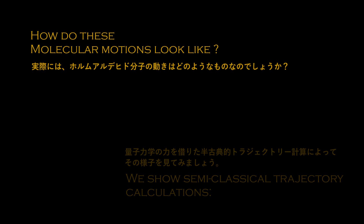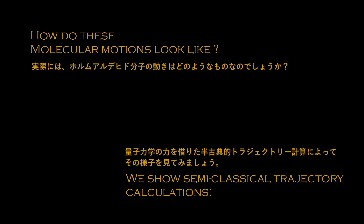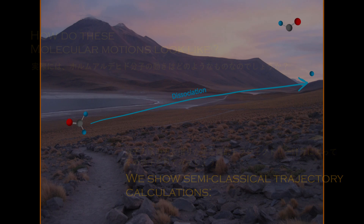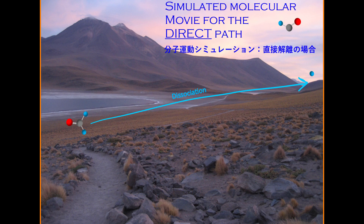How do these molecular motions look like? We show semi-classical trajectory calculations. First, you will see a simulated molecular movie for the direct dissociation path.